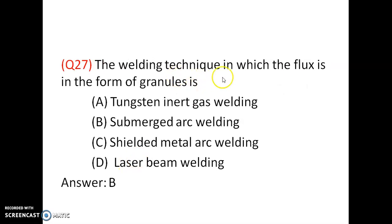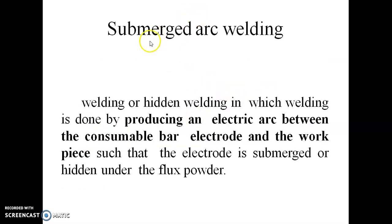The welding technique in which the flux is in the form of granules is — tungsten inert gas welding, submerged arc welding, shielded metal arc welding, laser beam welding. The answer is submerged arc welding. Option B is correct. In submerged arc welding, the welding is done by producing an electric arc between the consumable bar electrode and the workpiece such that the electrode is submerged or hidden under the flux powder.